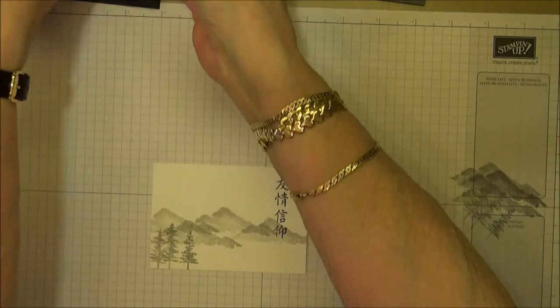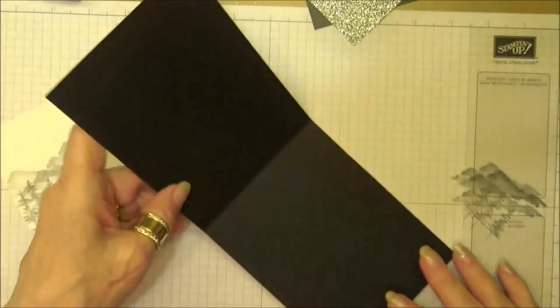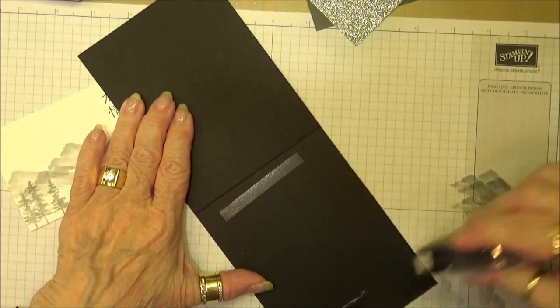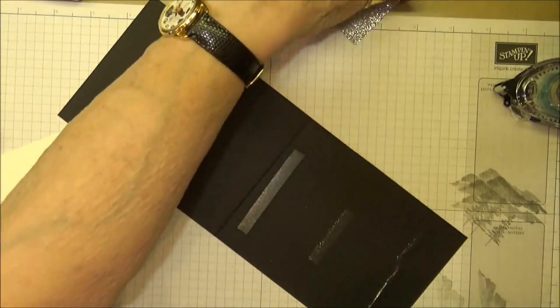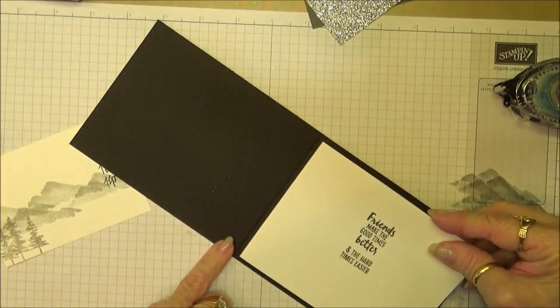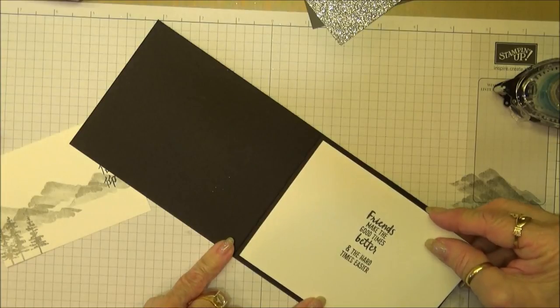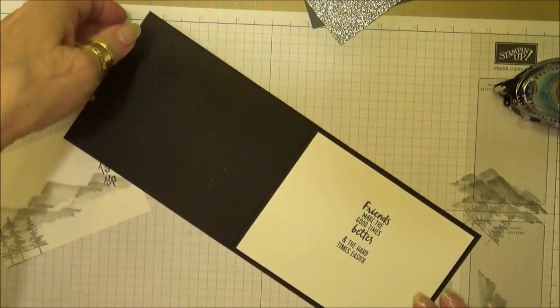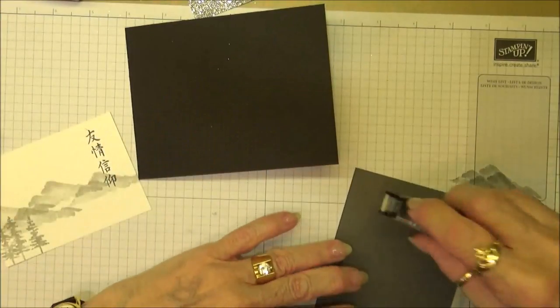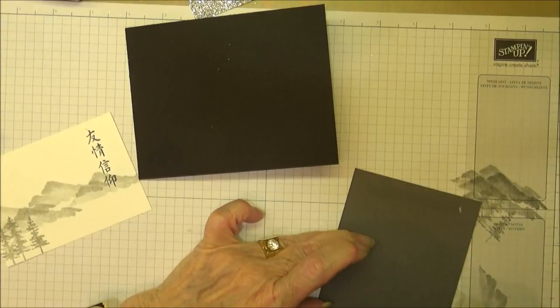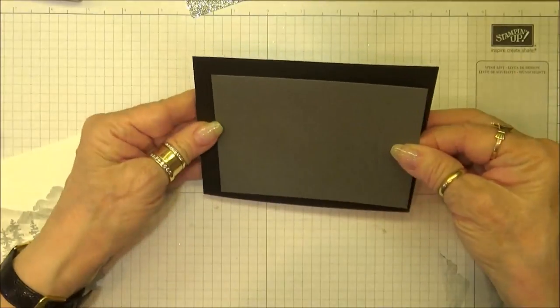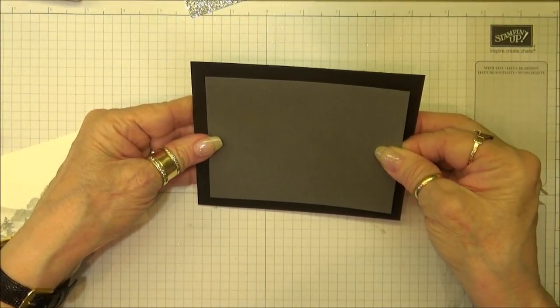Let's go ahead and put the card together. Use our snail adhesive to mount the inside, and then the first piece we'll stamp will be our basic gray cardstock. We just want to make sure it's nicely centered.